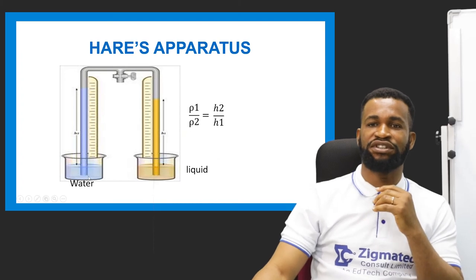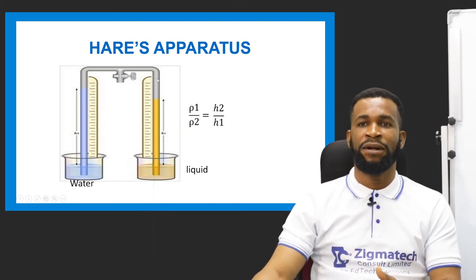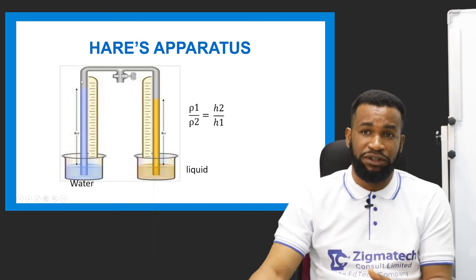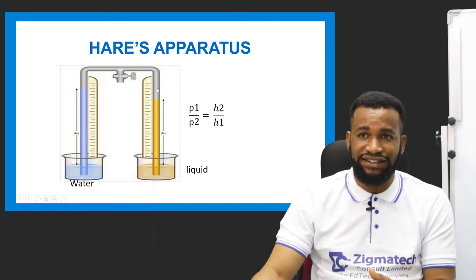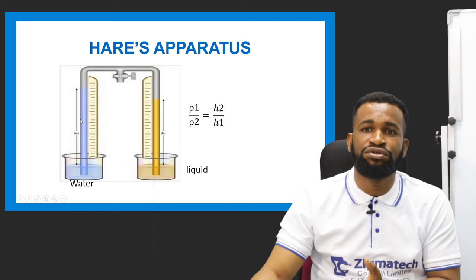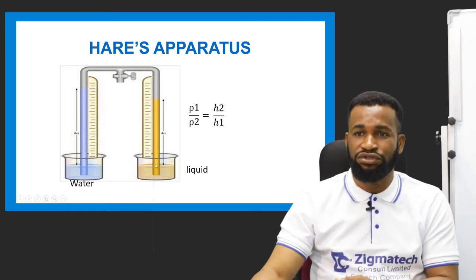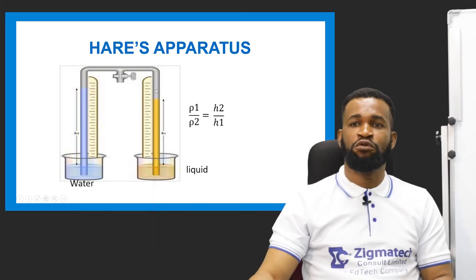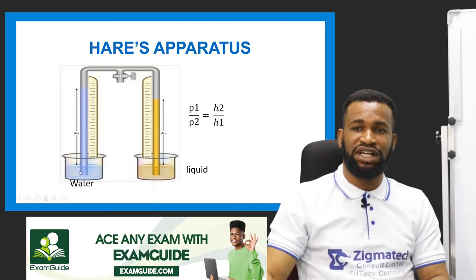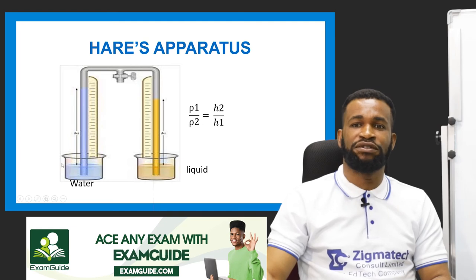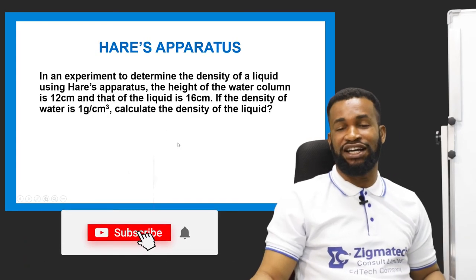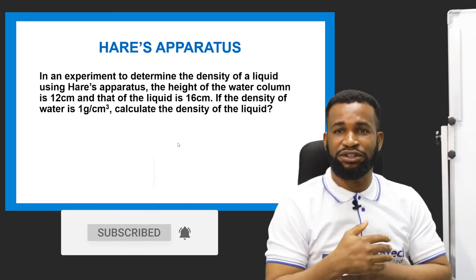If you look at this apparatus, you see that one side has water and the other has any liquid — it could be mercury or whatever. When this particular place is closed, the air is removed using a vacuum pump. What happens? The water will rise up its tube to a higher level, and the other liquid will also rise higher. The relationship is: the density of the liquid equals the height of the water column divided by the height of the liquid column. Let's look at an example to apply this principle to problem solving.